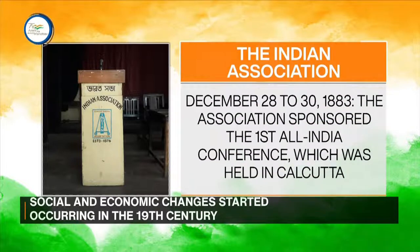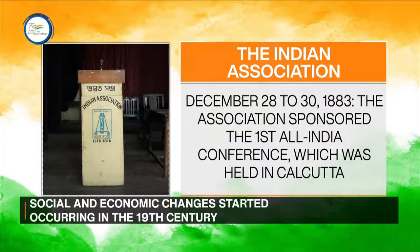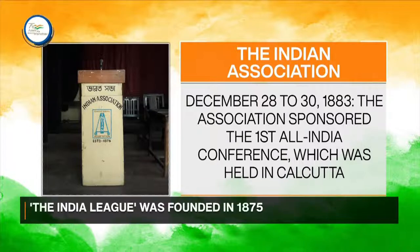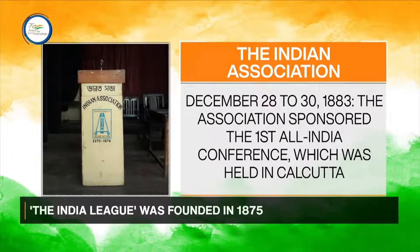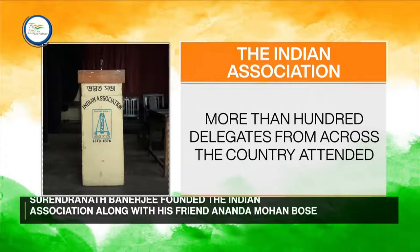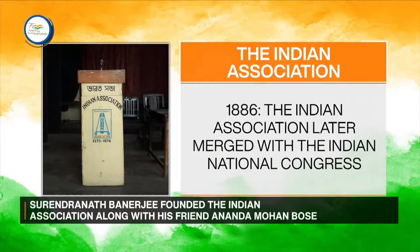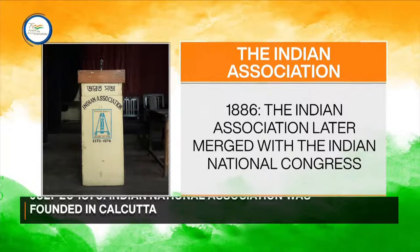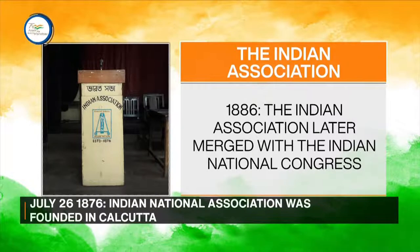The Association sponsored the first All India Conference, which was held in Calcutta from December 28th to 30th, 1883, with more than a hundred delegates from across the country attending. The Indian Association later merged with the Indian National Congress in 1886.